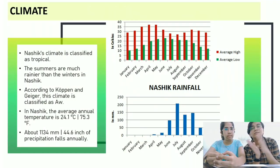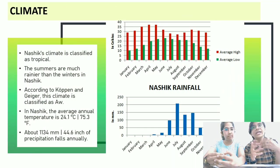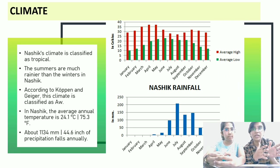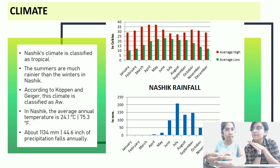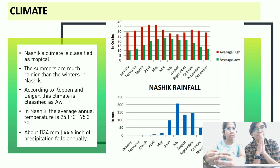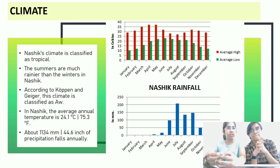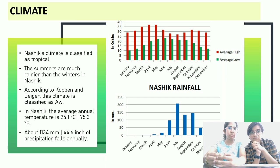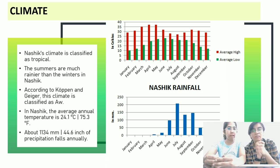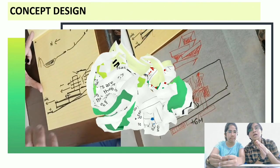Here comes the climate. It has a very tropical climate. The summers are much rainier than the winters in Nashik. There is a lot of humidity and high temperatures throughout the year, so we need natural cooling — otherwise we'll have to provide artificial cooling systems.